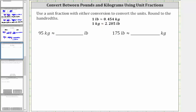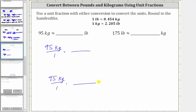In the first example, we're asked to convert 95 kilograms to pounds. We begin by writing 95 kilograms as a fraction with a denominator of one. And now we multiply by a unit fraction to convert kilograms to pounds. The important thing to recognize here is you want kilograms to simplify out, leaving us with pounds. Right now we have kilograms in the numerator, which means for the unit fraction, kilograms must be in the denominator and pounds must be in the numerator.